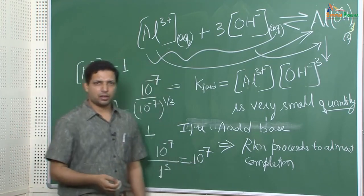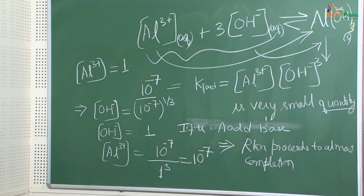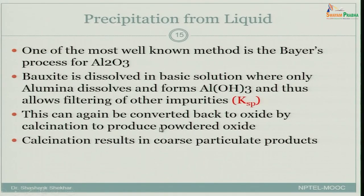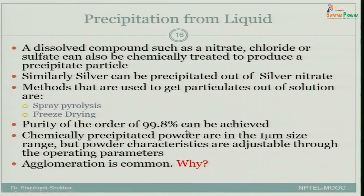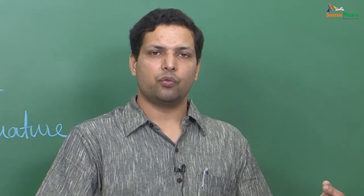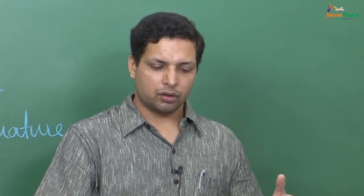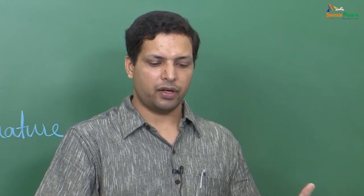This is a powerful method to not only remove unwanted compounds but also to precipitate out powder-size particulates of Al(OH)₃. This can then be converted back to oxide by calcination to produce powdered Al₂O₃, although calcination results in a coarser particulate product. Precipitation from liquid is also used with other dissolved compounds — such as nitrate, chloride, or sulphate — for example, silver can be precipitated out of silver nitrate solution.